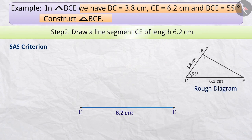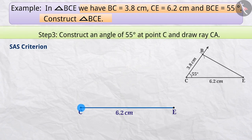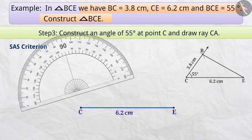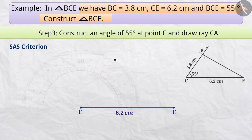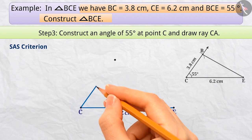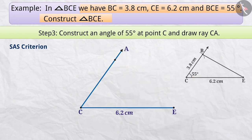Step 3: Using a protractor, construct an angle of 55 degrees at point C. In other words, we will draw a ray CA at point C which makes an angle of 55 degrees with the line segment CE. The point B must be somewhere on this ray CA.